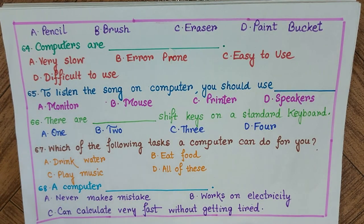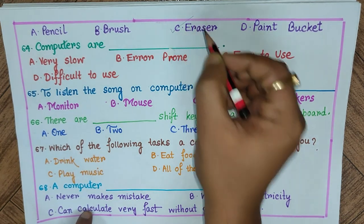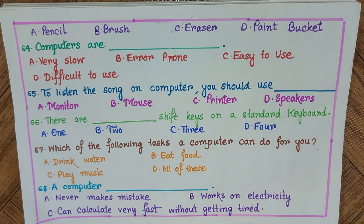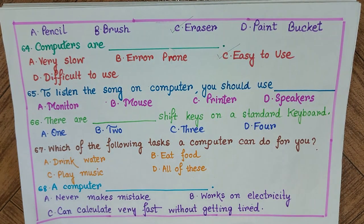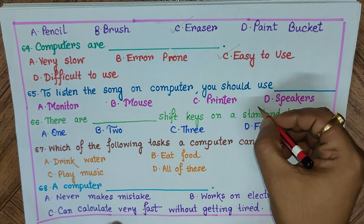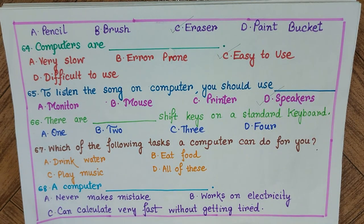Question 63 options: A) pencil, B) brush, C) eraser, D) paint bucket. The answer is C) eraser. Question 64: Computers are — A) very slow, B) error prone, C) easy to use, D) difficult to use. The answer is C) easy to use. Question 65: To listen to a song on a computer you should use — the answer is speakers.